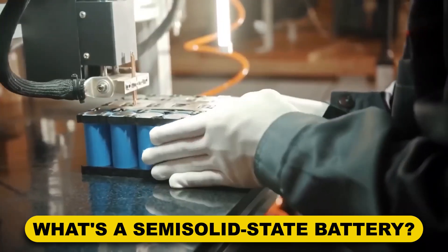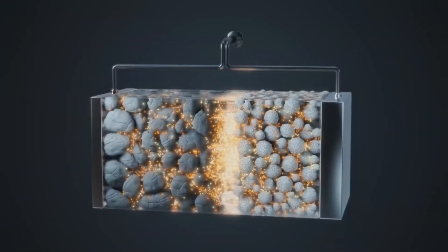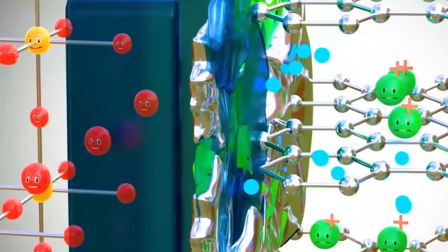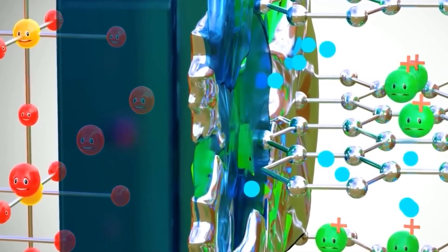What's a semi-solid state battery? A battery is referred to as a semi-solid battery if one electrode does not contain a liquid electrolyte and the other electrode does, or half of the total mass or volume of the electrolyte in the monomer is made up of the solid electrolyte.